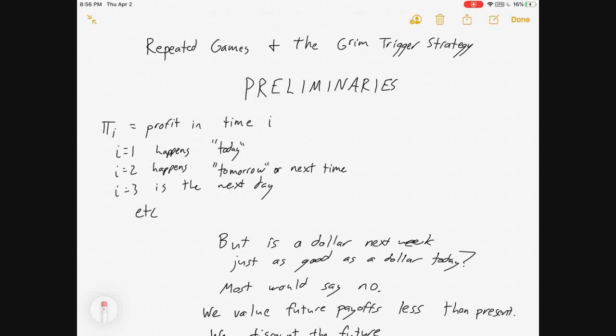Hey everybody, welcome to my video on repeated games and the grim trigger strategy. I am going to discuss what happens when two firms who would normally compete via Cournot in a one-stage game start interacting repeatedly, and we're going to find that when they do, it's possible to have collusion as a Nash equilibrium strategy.